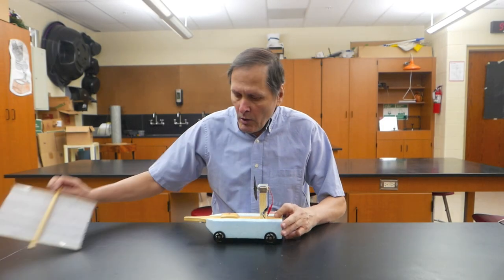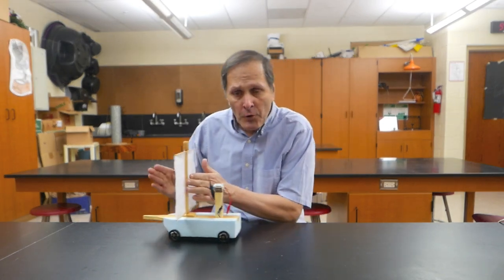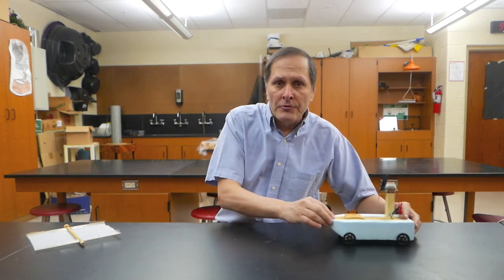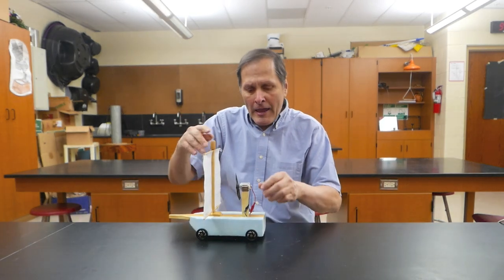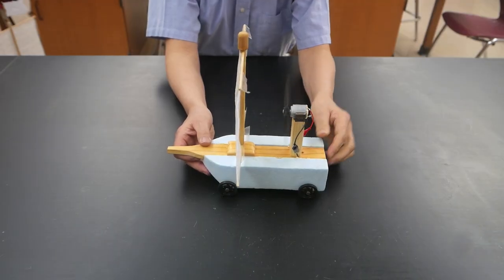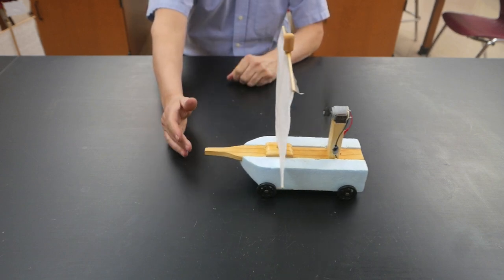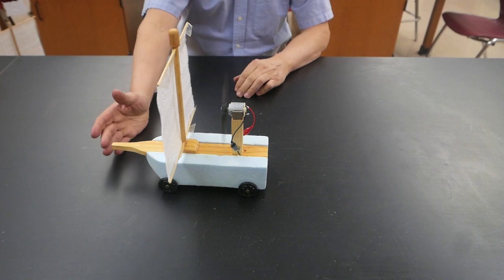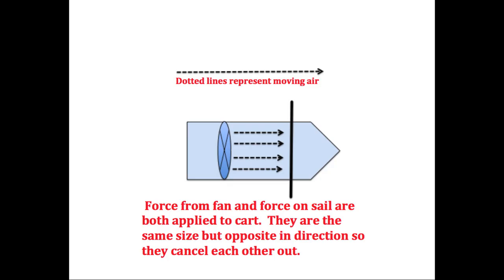So now the question becomes: with the sail, air hitting it wants to drive the cart forward. Without the sail, the fan wants to drive the cart backwards. So what's the result if I have the sail and the fan both acting on the cart together? In this case, the force from the fan and the force from the sail are both applied to the cart. They are the same size but opposite in direction, so they cancel each other out.